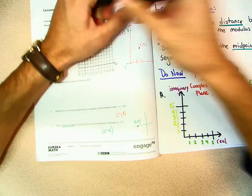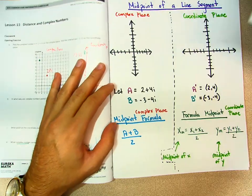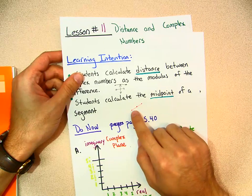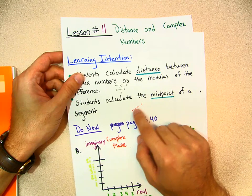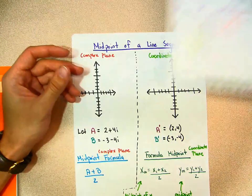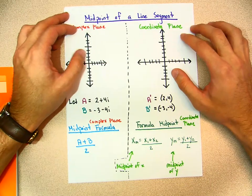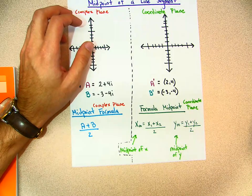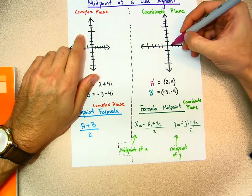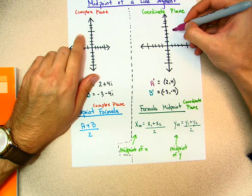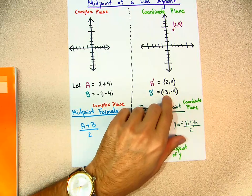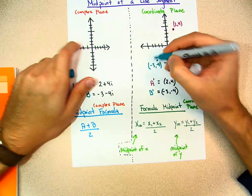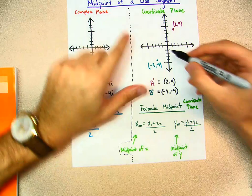To go through the lesson: the game plan, part one, is to find the midpoint of a line segment. If I have a line and I want to find the center point, I use the midpoint formula — hopefully from geometry. Let's say I have the point (2, 4): one, two... one, two, three, four — boom, that's (2, 4). And then where is (−3, −4)? One, two, three... one, two, three, four — this is (−3, −4). If I have a line connecting these two points, where is the center point? That's what the midpoint formula will find.